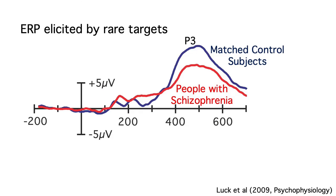Another common use of the temporal resolution of the ERP technique is to determine the nature of a difference in behavior between experimental conditions or between groups of subjects. For example, if we think more carefully about the oddball paradigm and the nature of the P3 wave, then the difference in P3 amplitude between people with schizophrenia and matched control subjects gives us a hint about the nature of cognitive impairment in schizophrenia. We'll talk about this in more detail later in this set of videos.